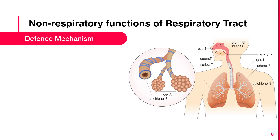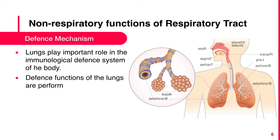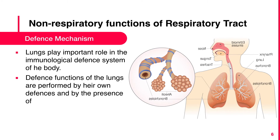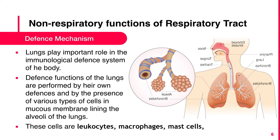Defense Mechanism: The lungs play an important role in the immunological defense system of the body. Defense functions are performed by various types of cells present in the mucous membrane lining the alveoli of the lungs. These cells are leukocytes, macrophages, mast cells, natural killer cells, and dendritic cells.